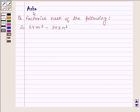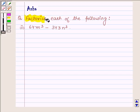Hi and welcome to the session. I am Asha and I'm going to help you with the following question: Factorize each of the following. Part ii: 64m³ - 343n³.